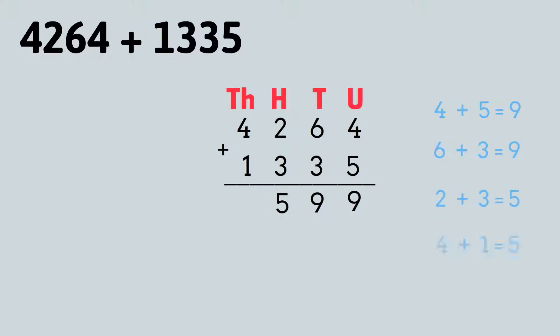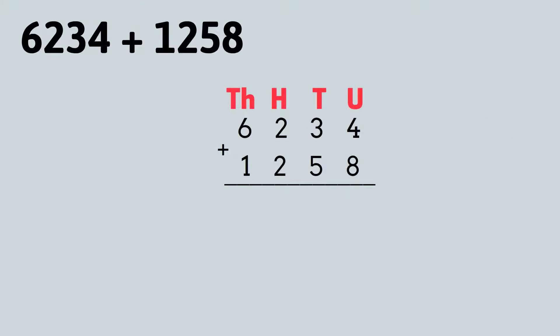Therefore, four thousand two hundred and sixty four add one thousand three hundred and thirty five equals five thousand five hundred and ninety nine. Here's another example. Let's start by adding the units.